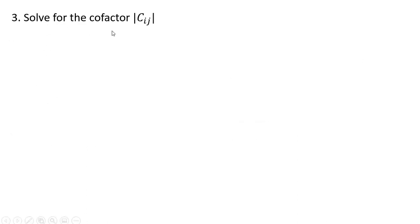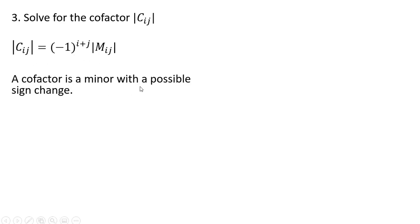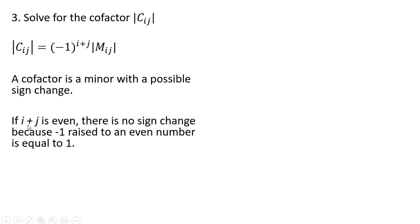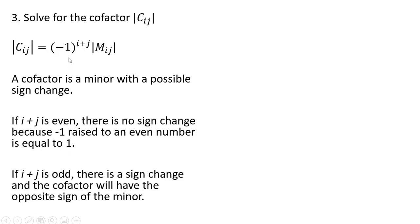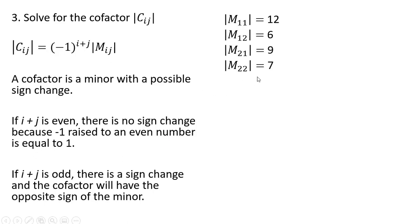The next step is to solve for the cofactor. A cofactor is a minor with a possible sign change — it's the minor multiplied by minus 1 raised to the power of i plus j, where i and j are the row and column of that element. If i plus j is even, there is no sign change, because minus 1 raised to an even number equals 1. If i plus j is odd, there will be a sign change and the cofactor will have the opposite sign of the minor.